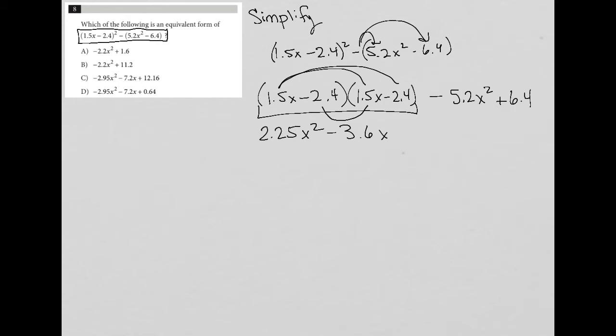I have another, so minus 2.4 times 1.5. So once again, I have another minus 3.6x. And then 2.4 times 2.4, I have plus 5.76.